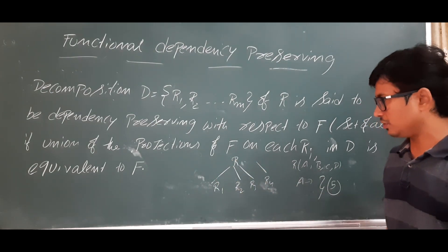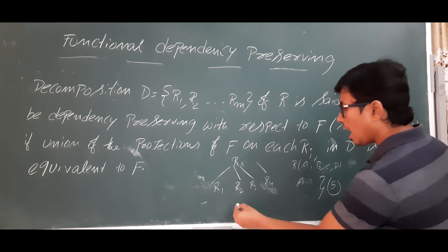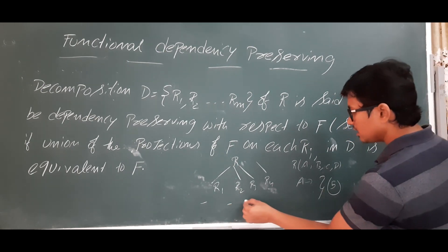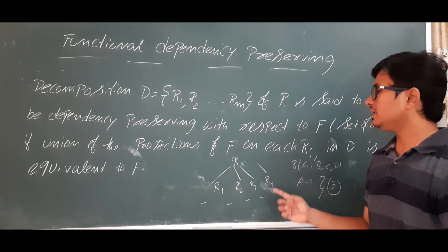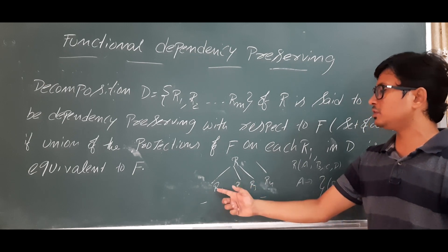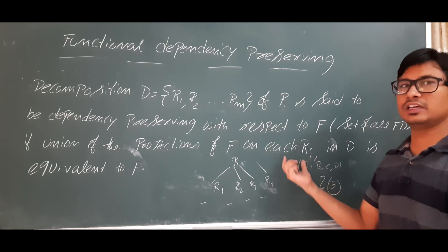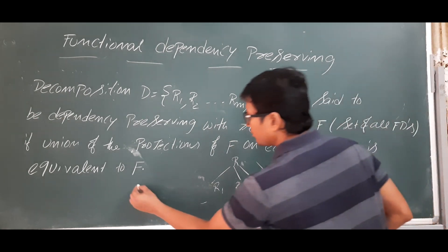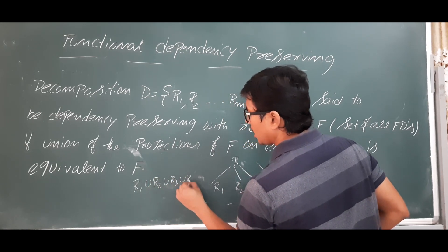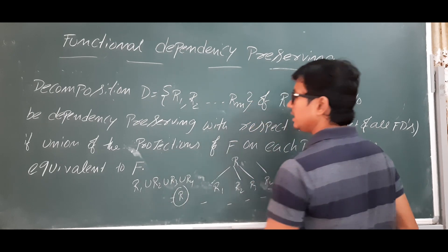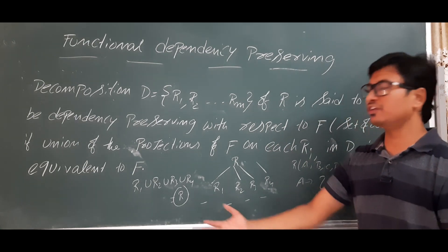After decomposing R into R1, R2, R3, R4, each will have some set of FDs. If you combine or union all the FDs possible in R1, R2, R3, and R4, and you get all the FDs which are there in R—meaning FDs of R1 union R2 union R3 union R4 is equivalent to R—then I can say functional dependency preserving is happening.